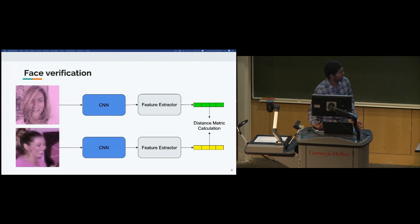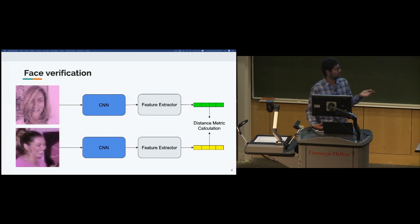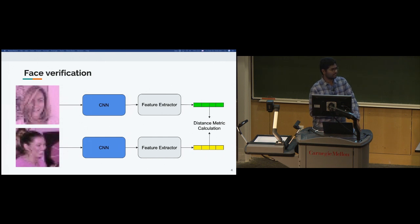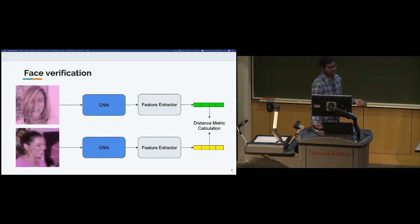Here's a rough outline of the general approach for face verification. Assume you have a pre-trained convolutional neural network that gives you a feature embedding as the final output. You pass an image through the CNN and it gives you a unique face embedding. You pass in another image and you have two embeddings. You calculate the distance between these two embeddings using any distance metric like Euclidean distance. For a well-trained feature embedding, the similarity metric between the two images should be good enough.